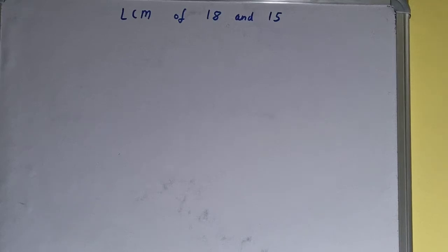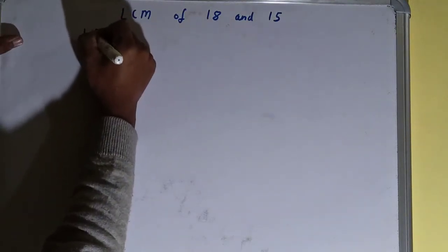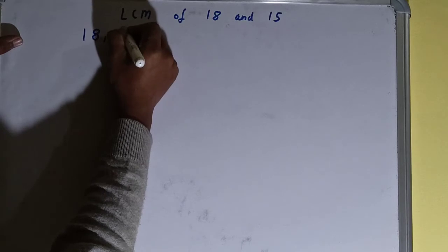Hello friends, and in this video I'll be helping you with the LCM of the numbers 18 and 15. So let's start. To find it out, we first need to write both the numbers like this: 18 comma 15.